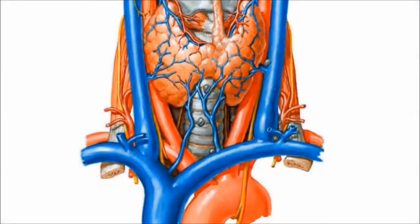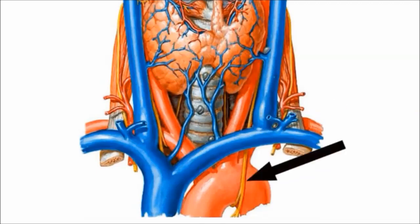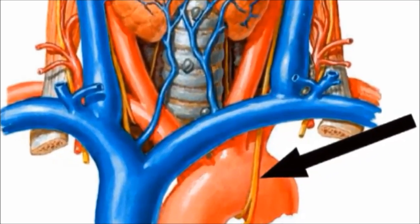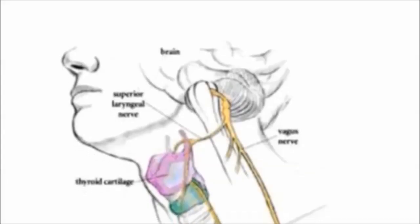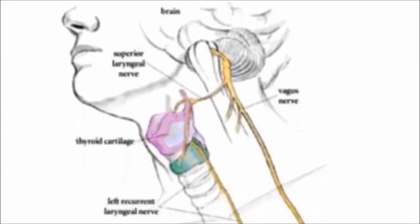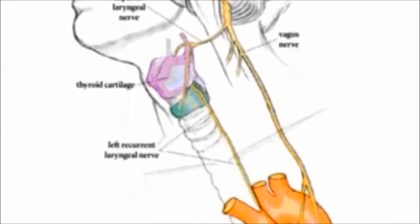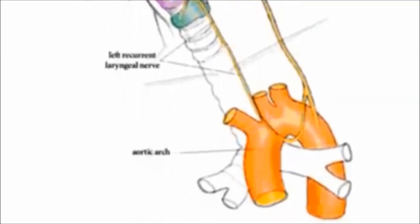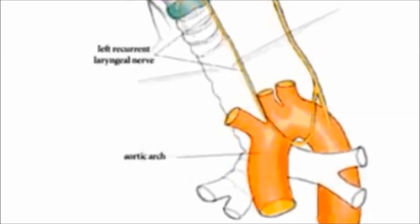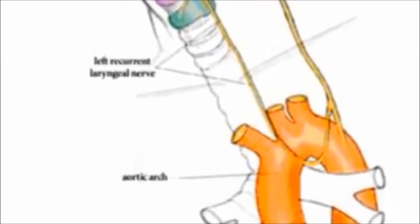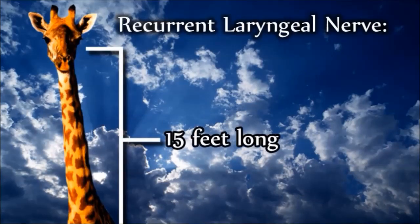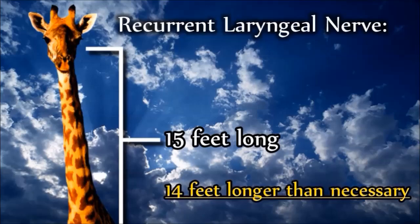Another seemingly wasteful structure is the recurrent laryngeal nerve, which regulates the ability to swallow in mammals, and in humans has the added function of controlling speech. In our mammalian ancestors, the nerve took a direct route from the brain to the throat, passing directly in front of the aorta. However, during the course of evolution, the aorta shifted inferiorly. Being such an important structure, the nerve could not be broken, so instead it has become longer in order to loop back up and reach the throat. In giraffes, the recurrent laryngeal nerve is 15 feet long, a full 14 feet longer than necessary.